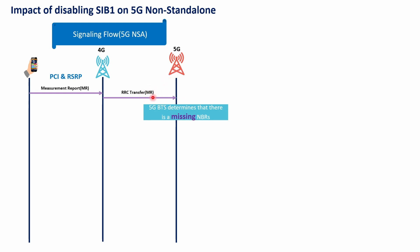Once the 5G receives the measurement report message covering PCI and RSRP, it will start searching the neighbor list within the 5G serving cell for that PCI. If this PCI is not found, it will be detected as a missing neighbor. In this case, the cell cannot be added because the system doesn't have information about the gNB identity and cell identity.